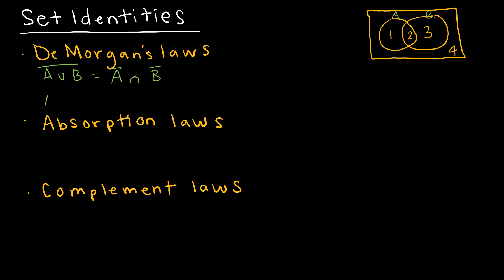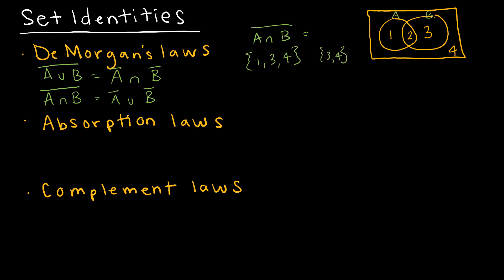DeMorgan's second law says the complement of (A intersect B) equals the complement of A union the complement of B. In the diagram, A intersect B is region 2, so not (A intersect B) is regions 1, 3, and 4. Not A is regions 3 and 4, and not B is regions 1 and 4. Their union gives 1, 3, and 4 — matching both sides and giving a visual example of DeMorgan's laws.